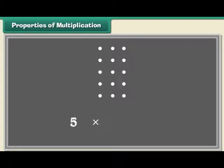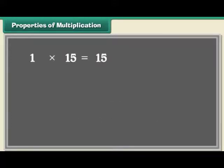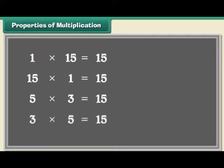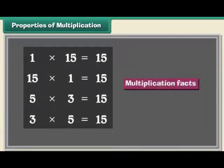The dots can be arranged in 5 rows of 3 dots each. 5 multiplied by 3 is equal to 15. 15 multiplied by 1 is equal to 15. 3 multiplied by 5 is equal to 15. These are called multiplication facts.